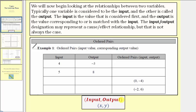A common variable for the input is x and a common variable for the output is y. So sometimes we see an ordered pair written as x comma y, but the variables don't have to be x and y. We're going to refer to an ordered pair as the input comma the output.